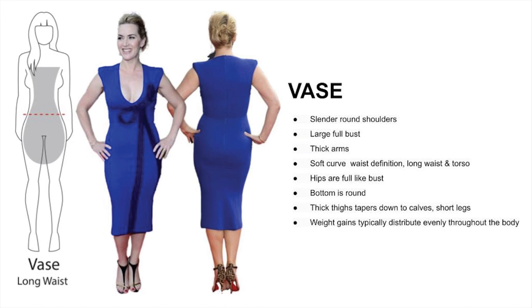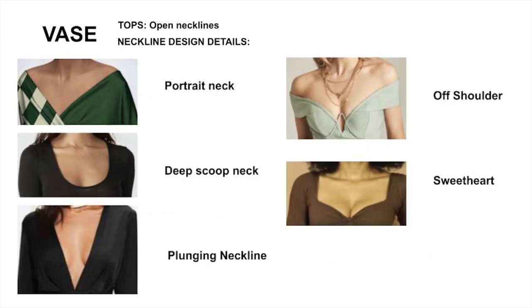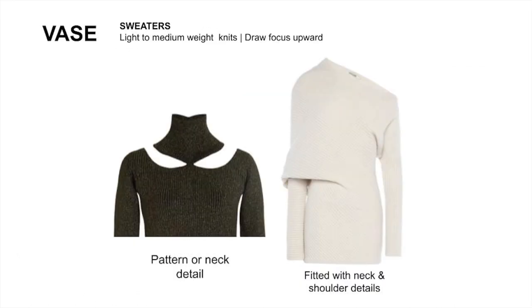Weight is typically gained evenly throughout the body. For tops, the key design features are an open neckline and fitted waist to accent the curves. Here are examples of open necklines and sleeve details. For sweaters, go with a light to medium weight and bring focus to the neck and shoulders.